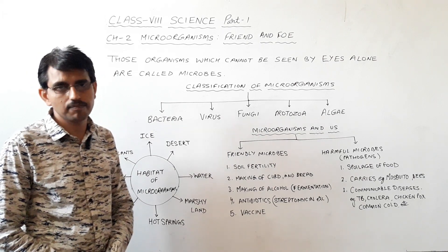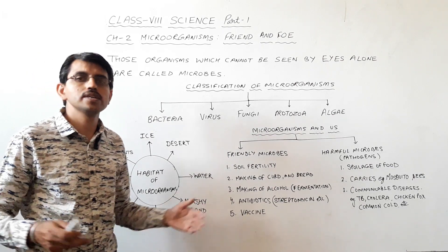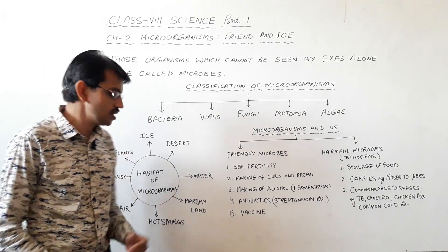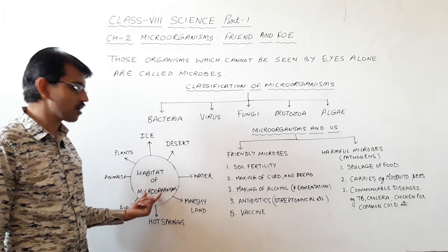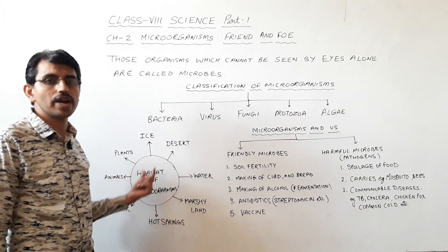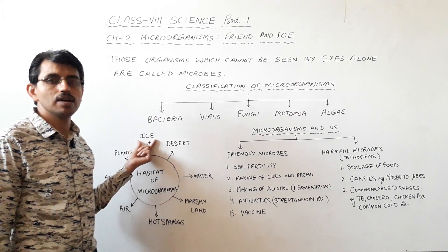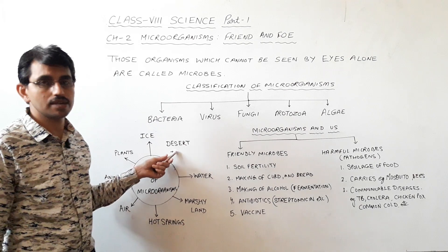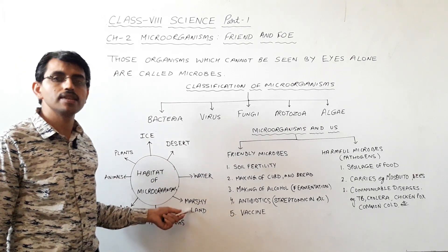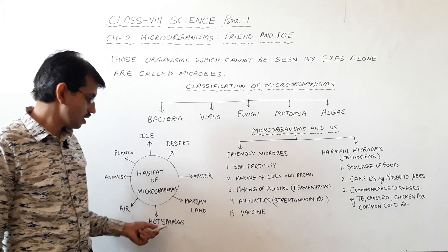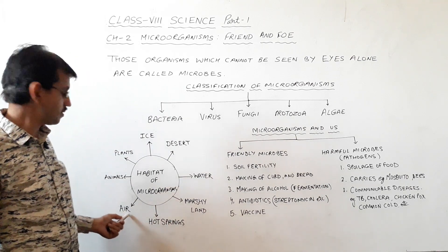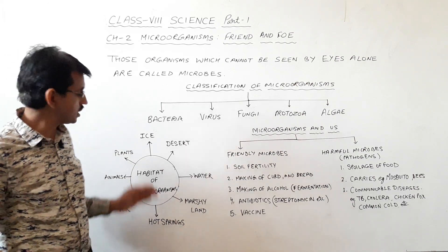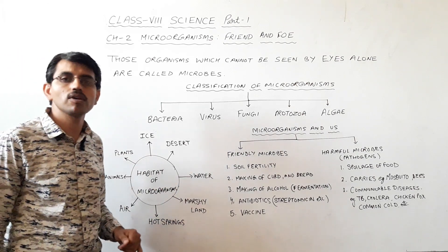Now the question is, where do these micro-organisms live? What is their habitat? Habitat means the place where they live. Micro-organisms are found in a variety of habitats — you can find them in the ice of Antarctica, in deserts, in water, in marshy land, in hot springs, in air, and on the body of plants and animals.